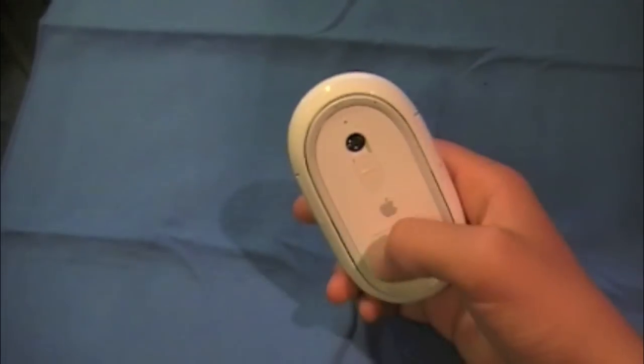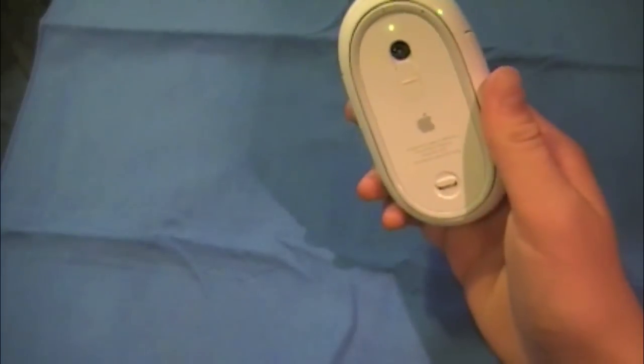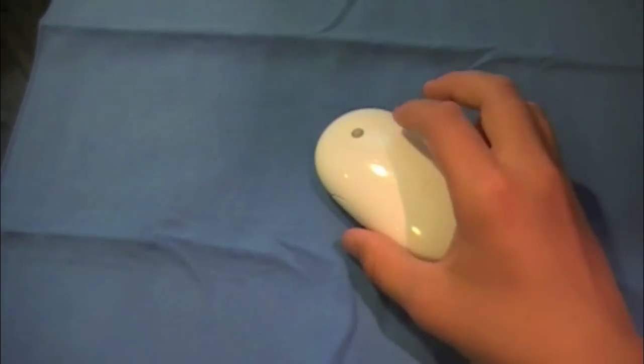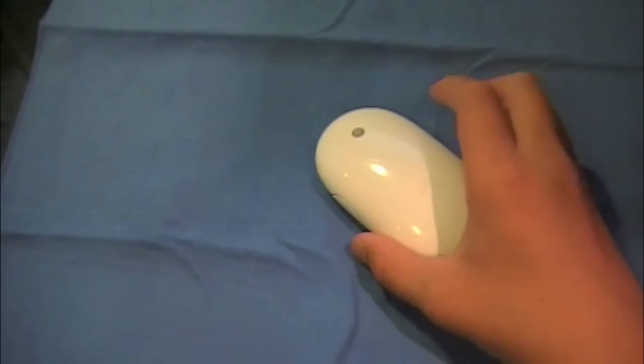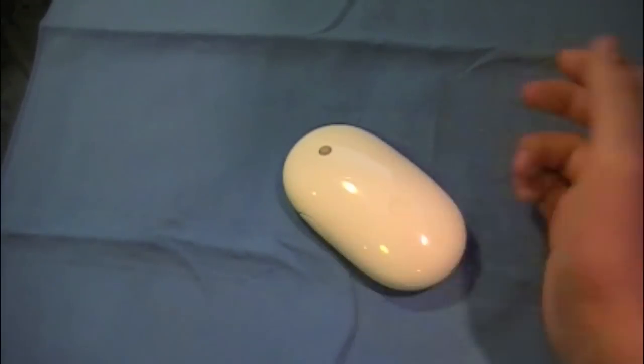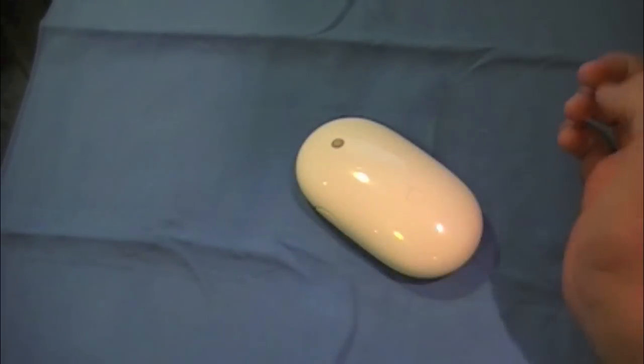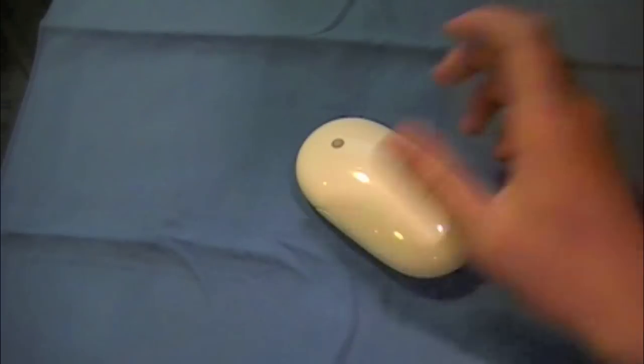The nice thing about the batteries though is this thing barely uses very much battery life. I've had this for about eight to ten months and I only have to change the battery once every two months, which is really nice. It'll give you a heads-up display on your desktop computer screen letting you know that the batteries are getting low. When it tells you that it's getting low, you still have a lot of time to use the mouse before it actually completely dies on you. So even though you do have to change the batteries, it gives you a good heads-up and you barely ever have to change them.